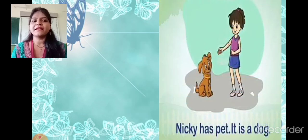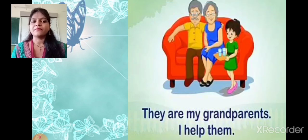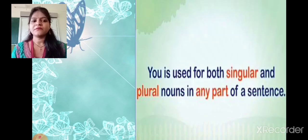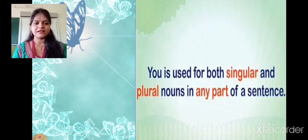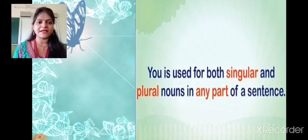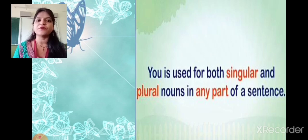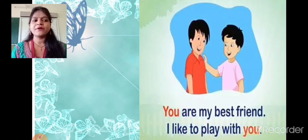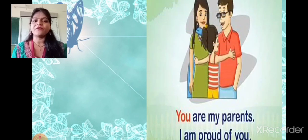For example: Nikki has a pet. It is a dog. They are my grandparents. I help them — this shows plural. Now, 'you' is used for both singular and plural nouns in any part of a sentence. So students, 'you' never changes. For example: You are my best friend. I like to play with you. You are my parents. I am proud of you.